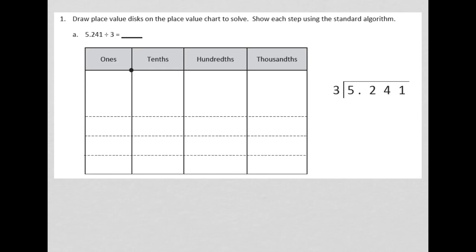We have 5.241 divided by 3. And first thing we need to do is we need to model that on the place value chart. So, I'm going to draw 5 ones, 2 tenths, 4 hundredths, and 1 thousandth.